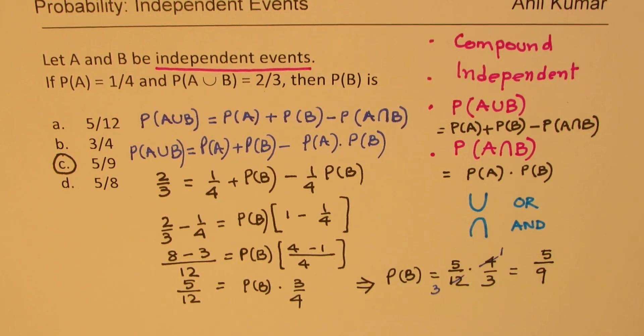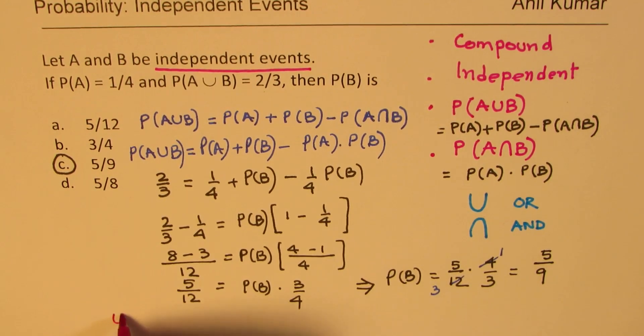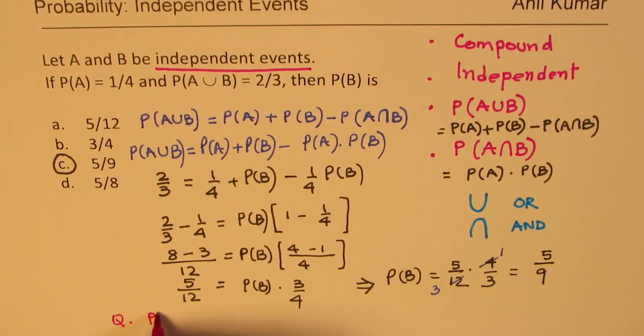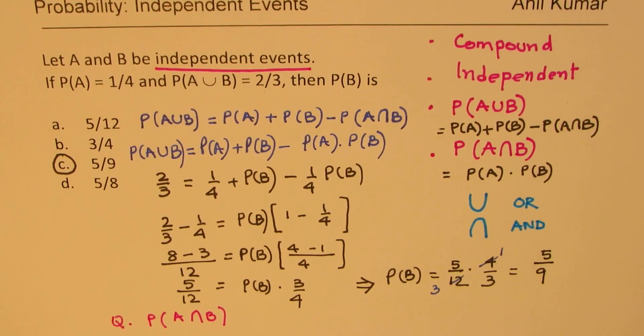That is how you are going to find the probability for B in the given condition. So, I hope that helps. You could actually extend this question and you can find what is the probability of A intersection B. You could do that. Perfect. Since you already know the probability of A and B.